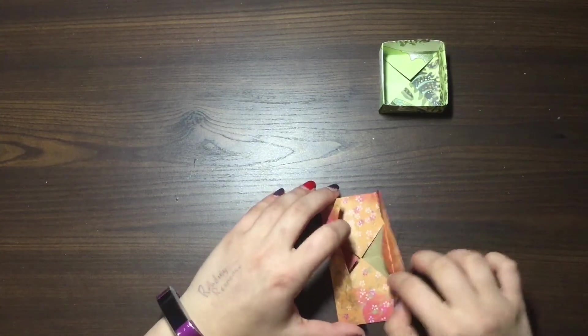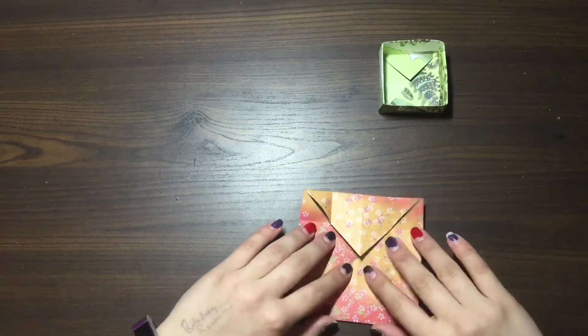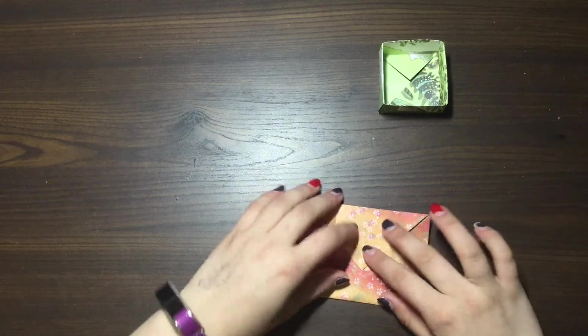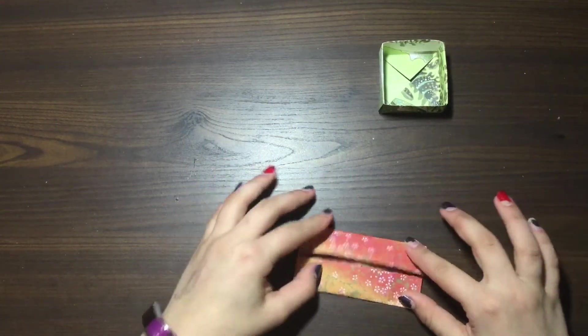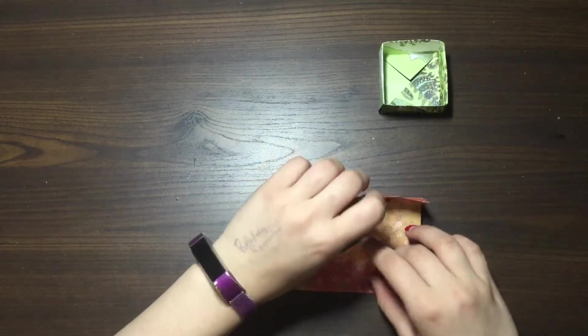So once you've done that, you're going to open these up, and you're going to take the first two flaps, and you're going to fold them in one more time, just making sure that the line is all there. And then you're going to pull these two flaps right out.